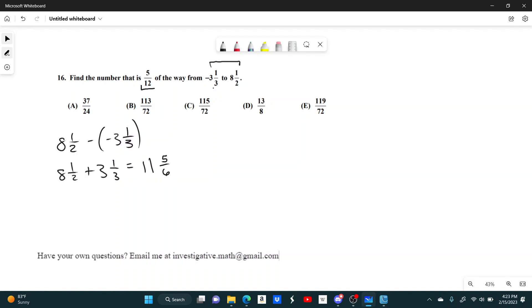And so we want to find the number that's 5 twelfths of the way. Take this, multiply it by 5 twelfths. And if you kind of imagine a number line, this is negative 3 and a third. And over here, this is 8 and a half.